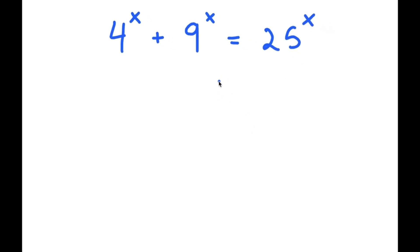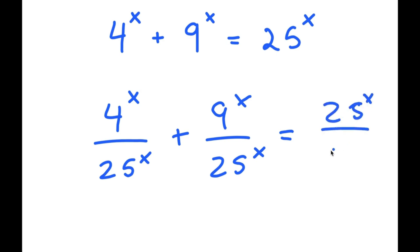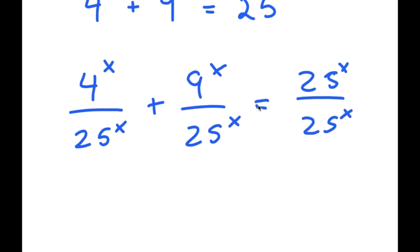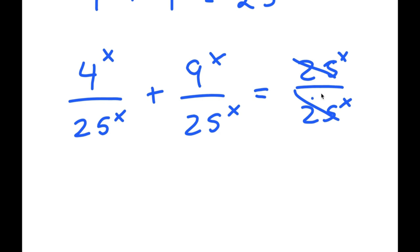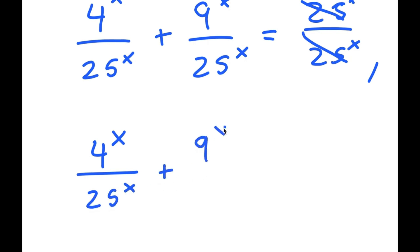To solve this, I'm going to start off by dividing every term by 25 to the power of x. So I get 4 to the power of x divided by 25 to the power of x, plus 9 to the power of x divided by 25 to the power of x, is equal to 25 to the power of x divided by 25 to the power of x. The 25s cancel out to give 1, so now I have (4^x)/(25^x) + (9^x)/(25^x) = 1.